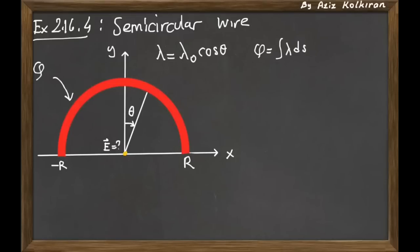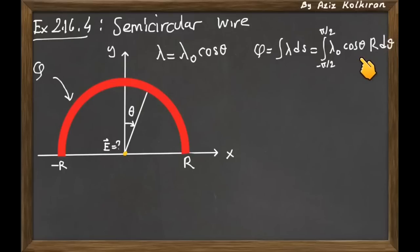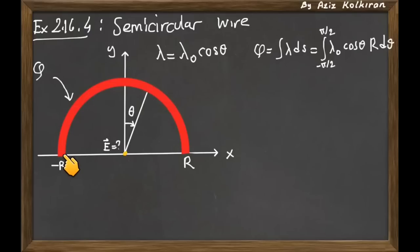Let's find the total charge Q in terms of the given lambda-zero and the radius of the semicircle. The expression is the integral of lambda times ds, where ds equals R times d-theta. The integrand is lambda-zero cosine-theta, and the angle runs from minus pi over 2 to pi over 2.